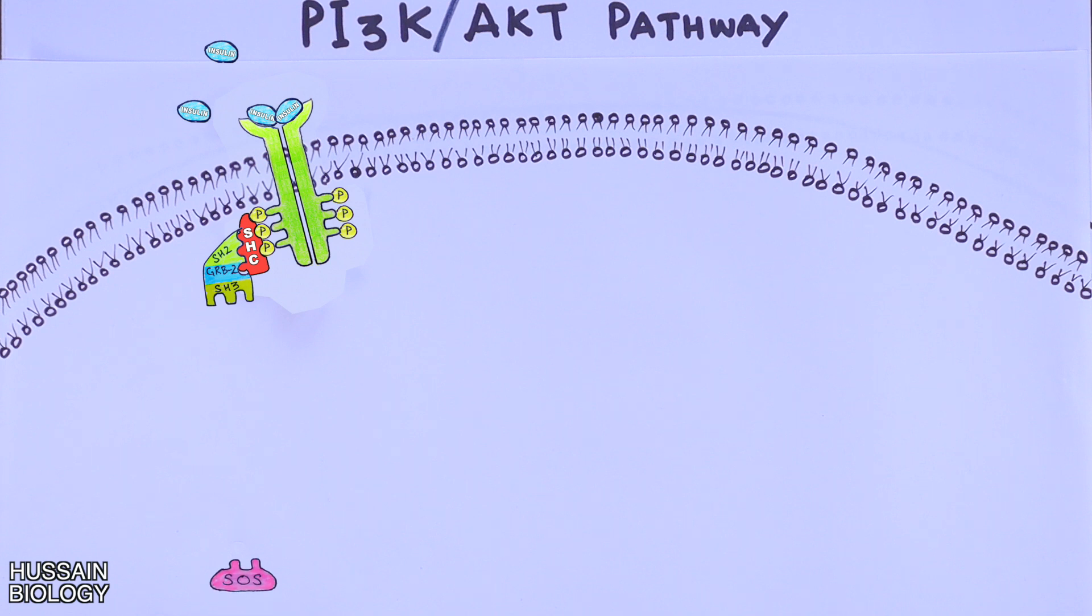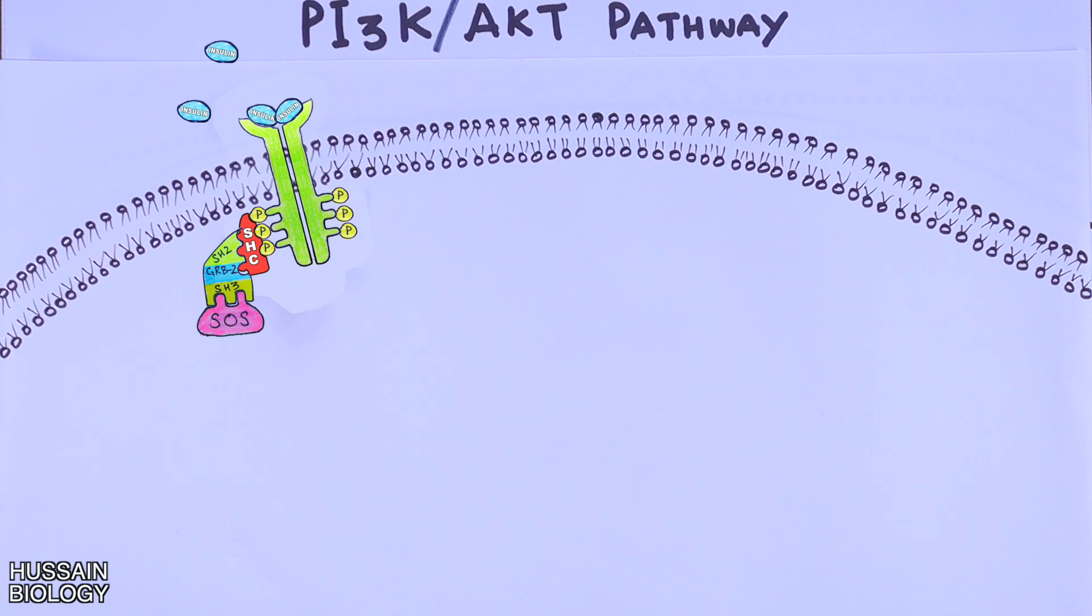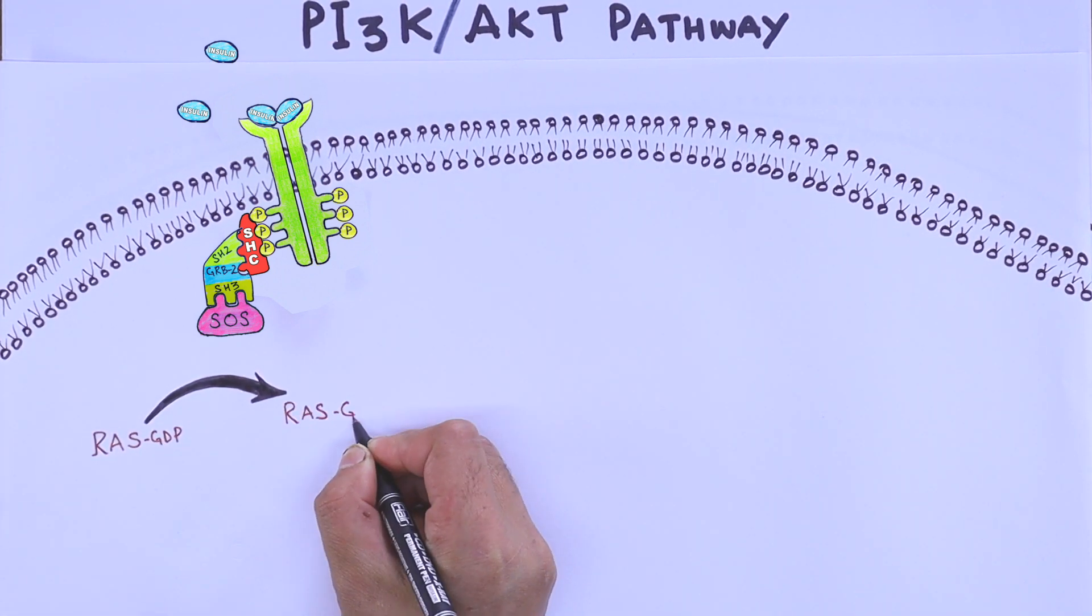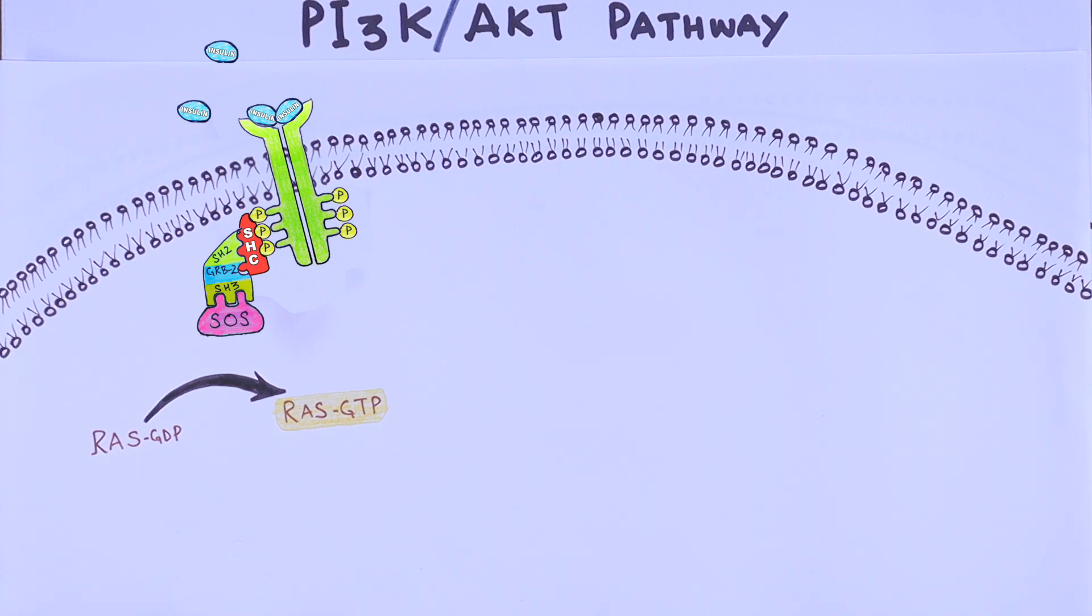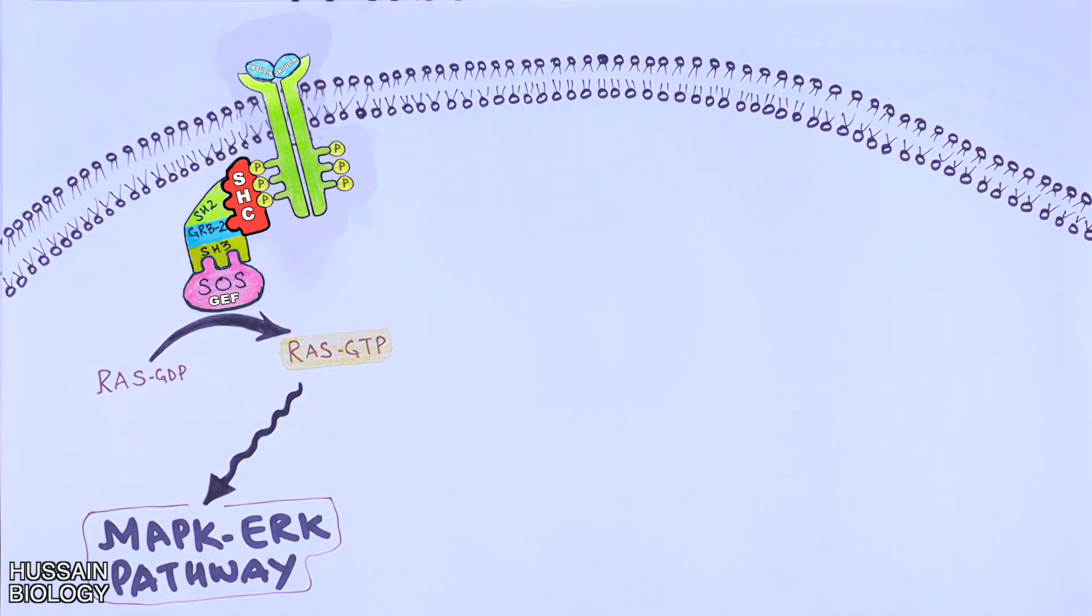For this we have SOS protein. The SOS protein comes in and binds with the SH3 domain of GRB2. SOS is a guanine nucleotide exchange factor which interacts with RAS proteins in order to turn GDP into GTP state. So here RAS-GDP is turned into RAS-GTP, that's its active state. This RAS-GTP can turn on MAPK-ERK pathway, but we need this RAS-GTP molecule for our AKT PKB pathway.